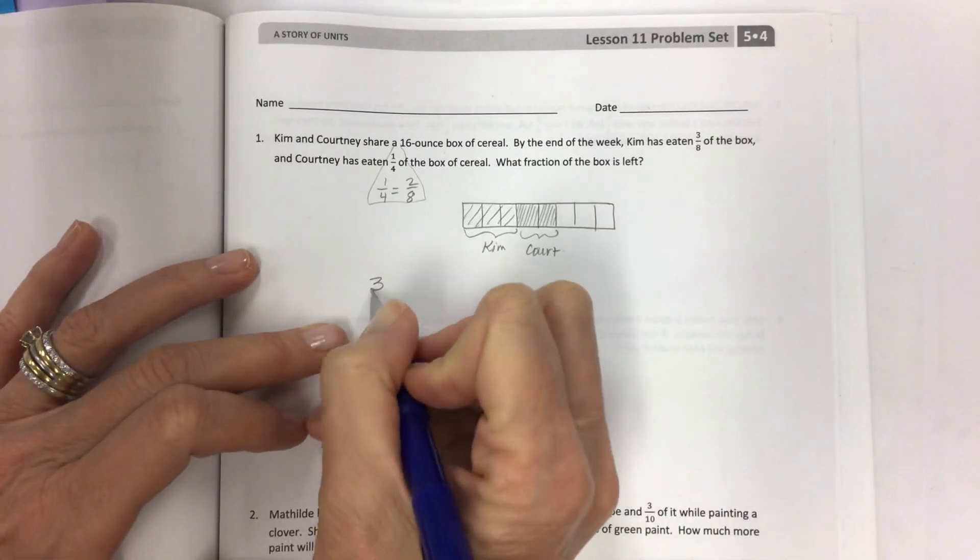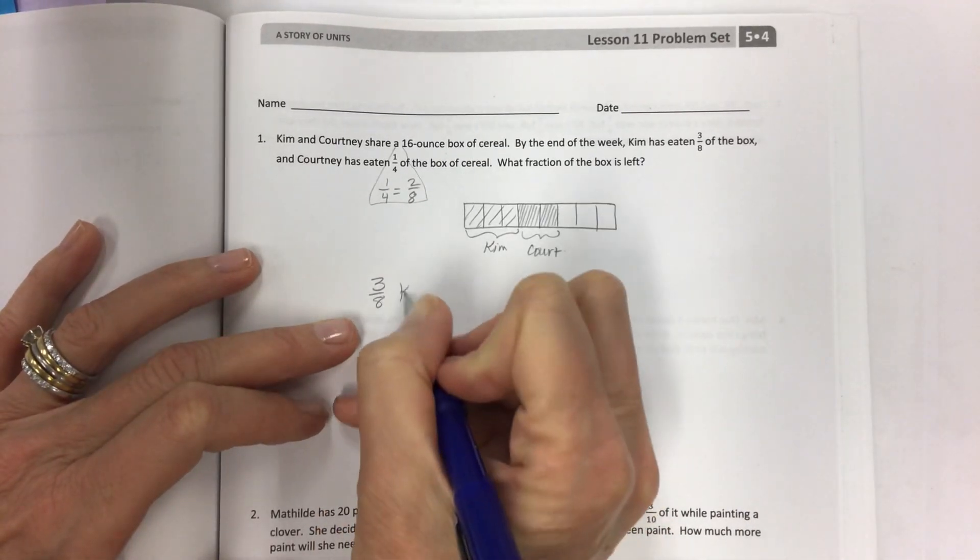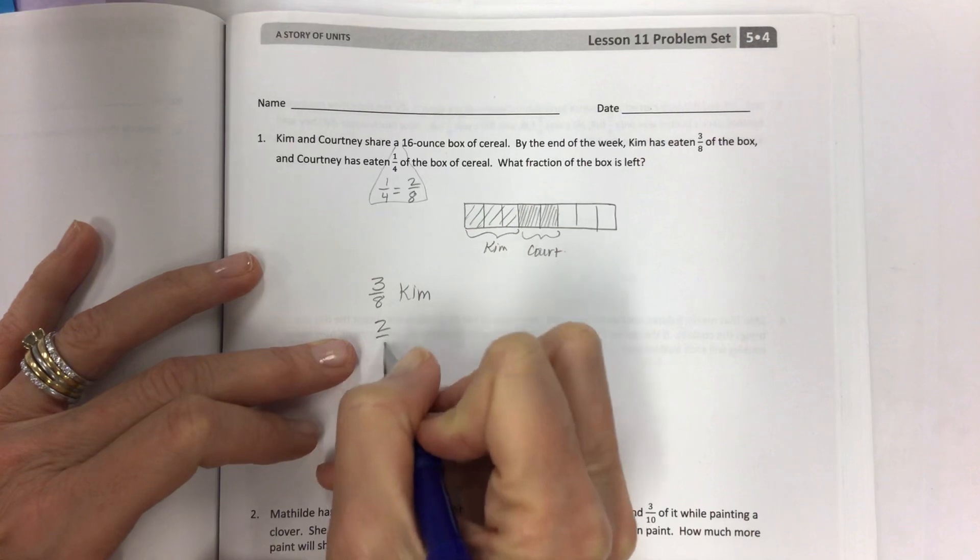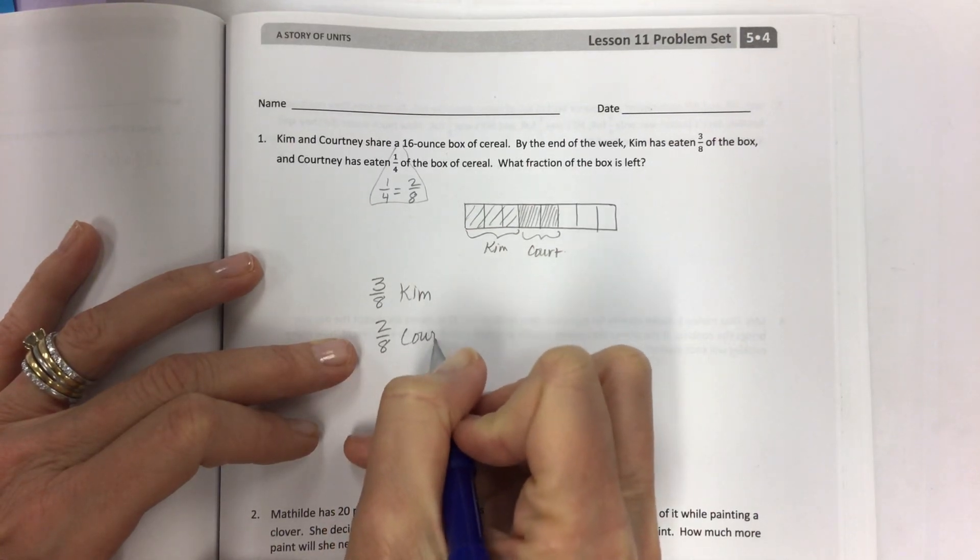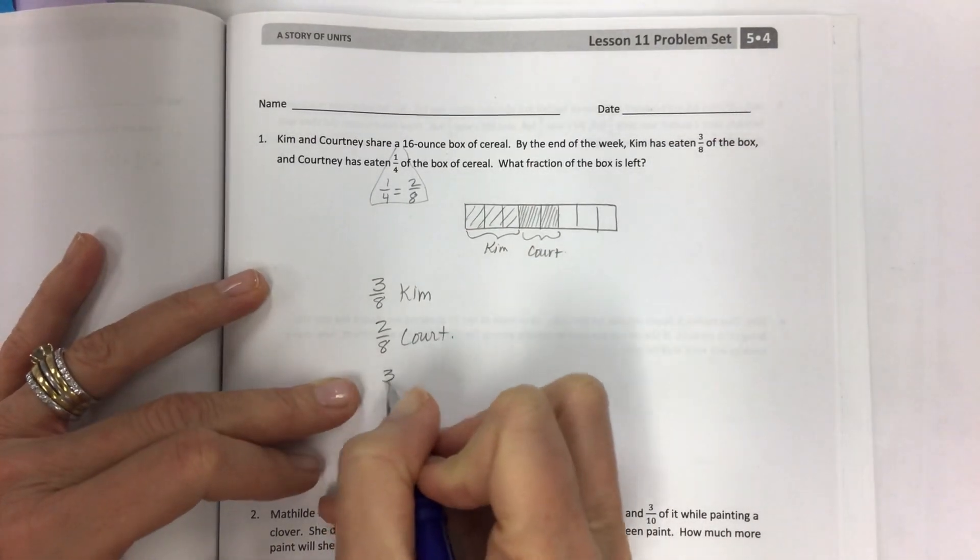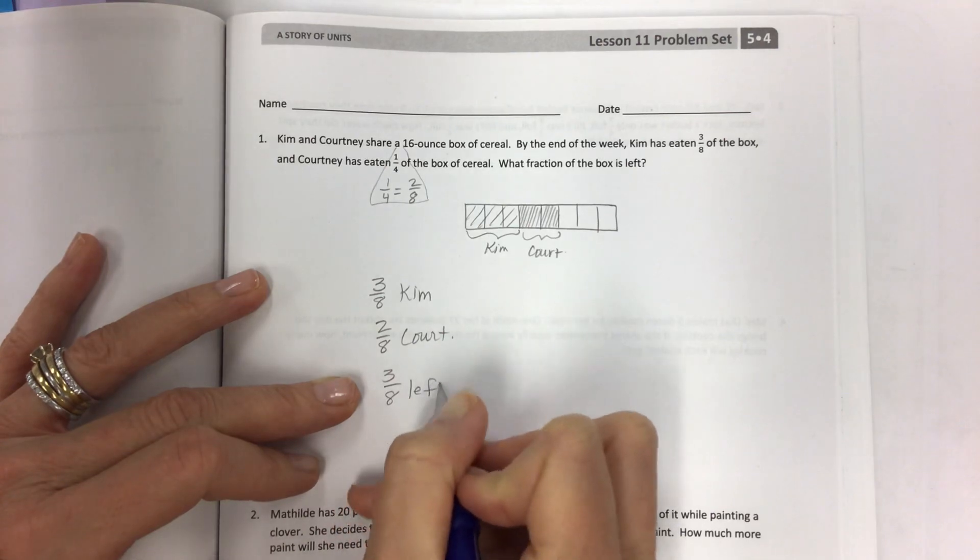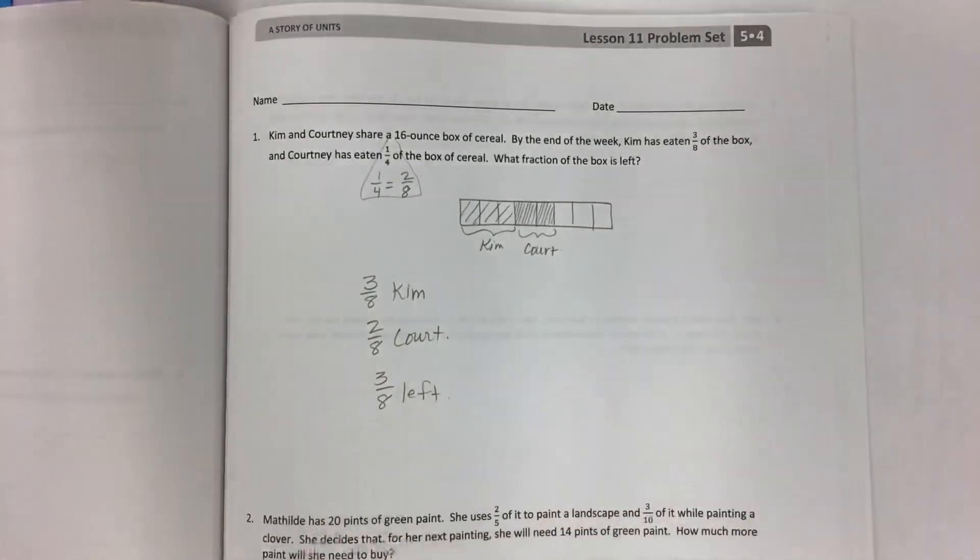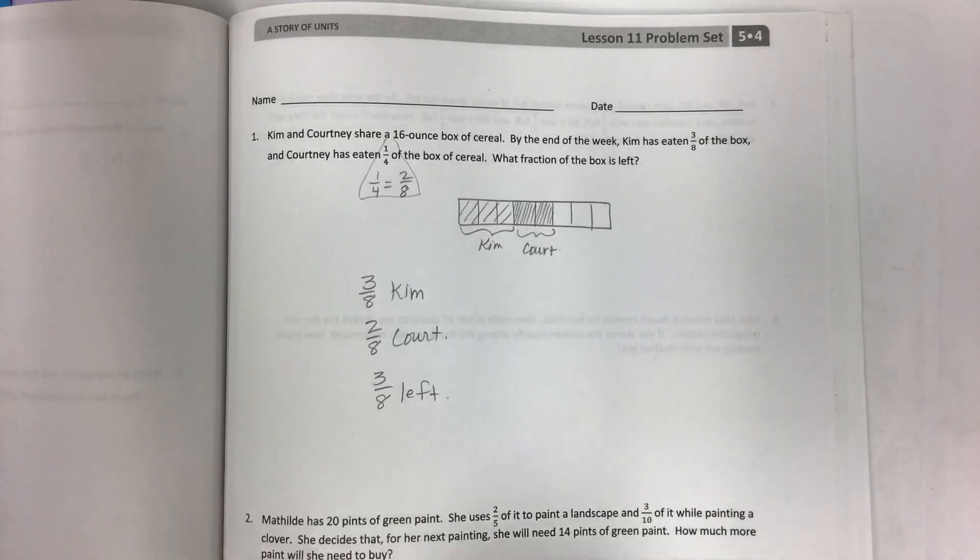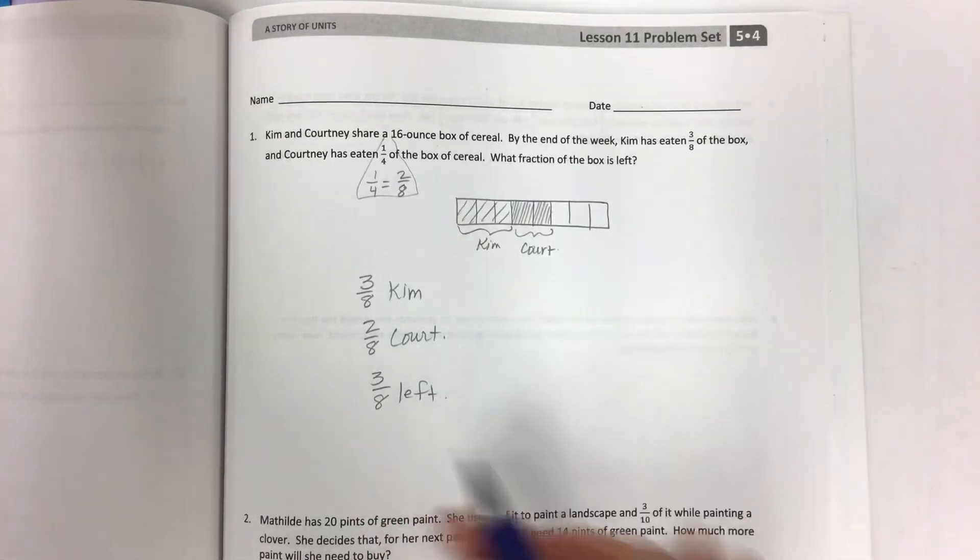And label each person's share, so Kim has eaten three-eighths. Two-eighths, that's going to be for Kim. And Courtney has eaten two-eighths. What fraction of the box is left? It's really easy.